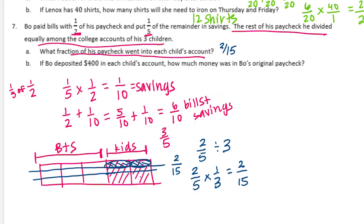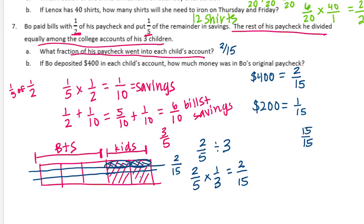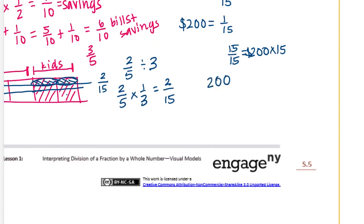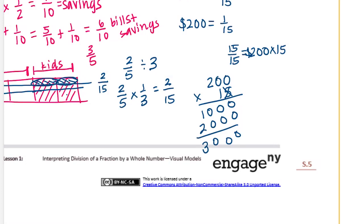Part B: if Beau deposited $400 in each child's account, how much money was in Beau's original paycheck? $400 is equal to two-fifteenths. We can find one-fifteenth by dividing $400 by two, which gives $200. Then to find fifteen-fifteenths we do $200 times fifteen and we get $3,000. So Beau was originally paid $3,000.